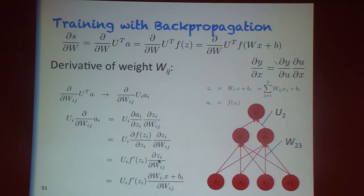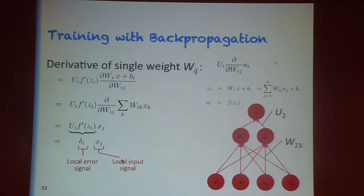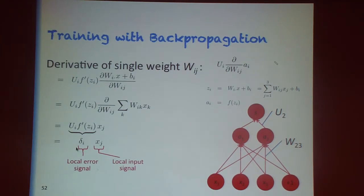For z — the output of our linear layer, the dot product — there's only one term in which w_{ij} is mentioned, so its derivative is just x_j. What we end up with at the end is two terms: x_j, the local input signal fed into w_{2,3}, and the local error signal calculated in terms of the i variable on the output of the network.